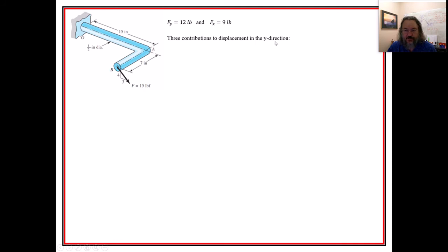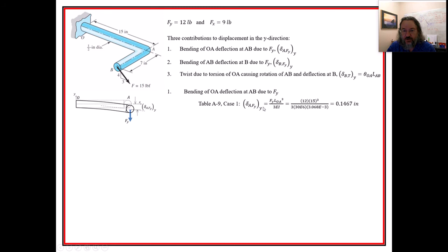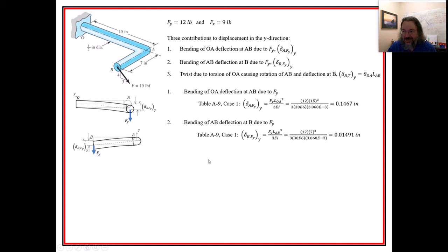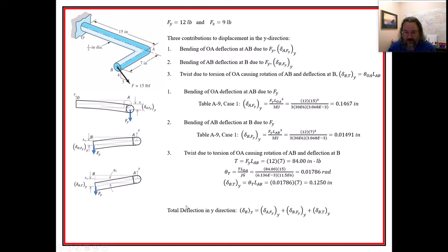I divided the 15-pound force into Y and X components. Starting with contributions in the Y direction — very similar to before: bending of OA, bending of AB, and torsion causing a twist. These are all the same ingredients. The torque on the long part is the Y-force times length — 12 times 7 — applied to piece OA.